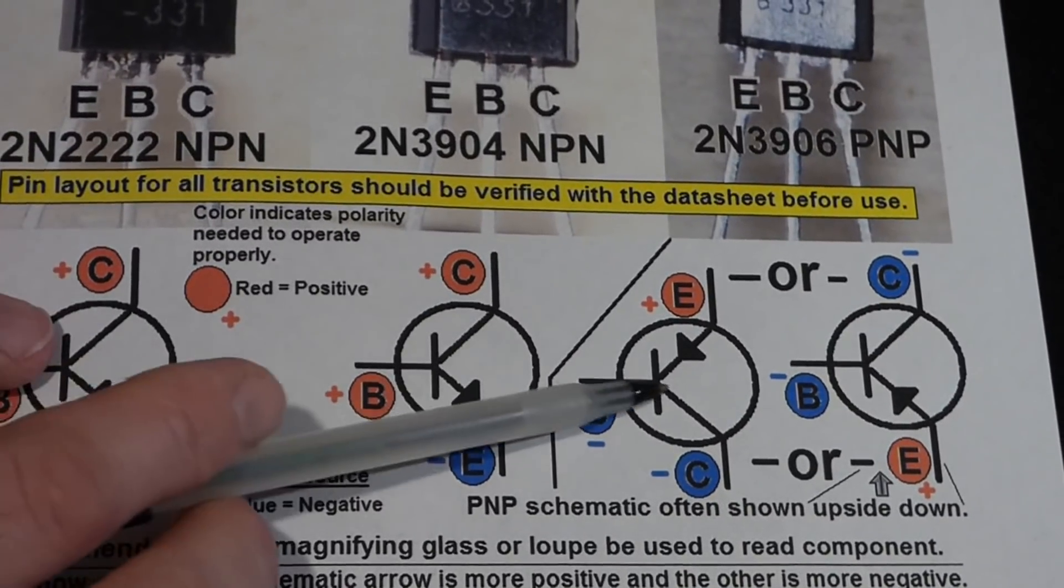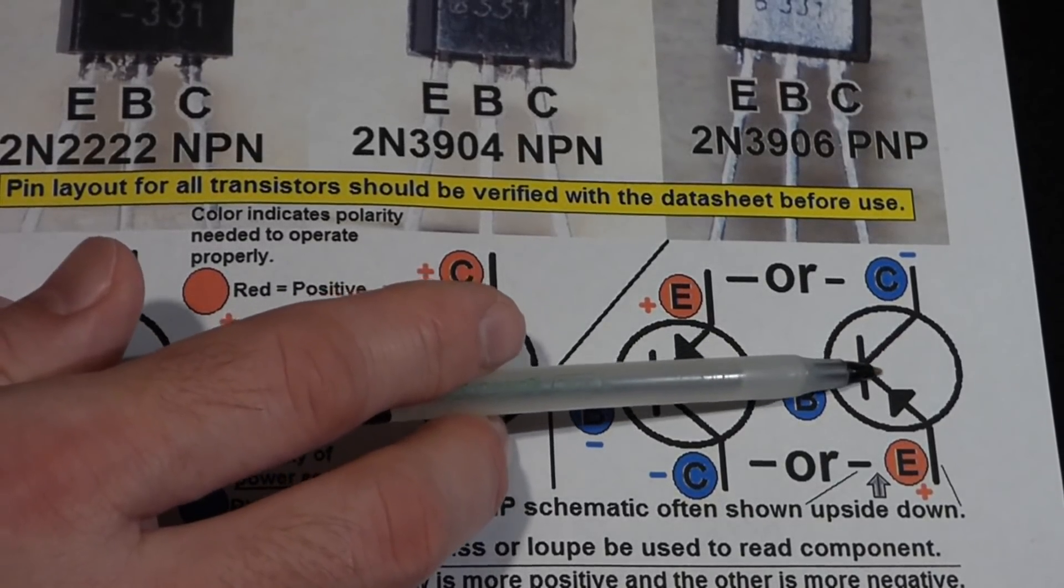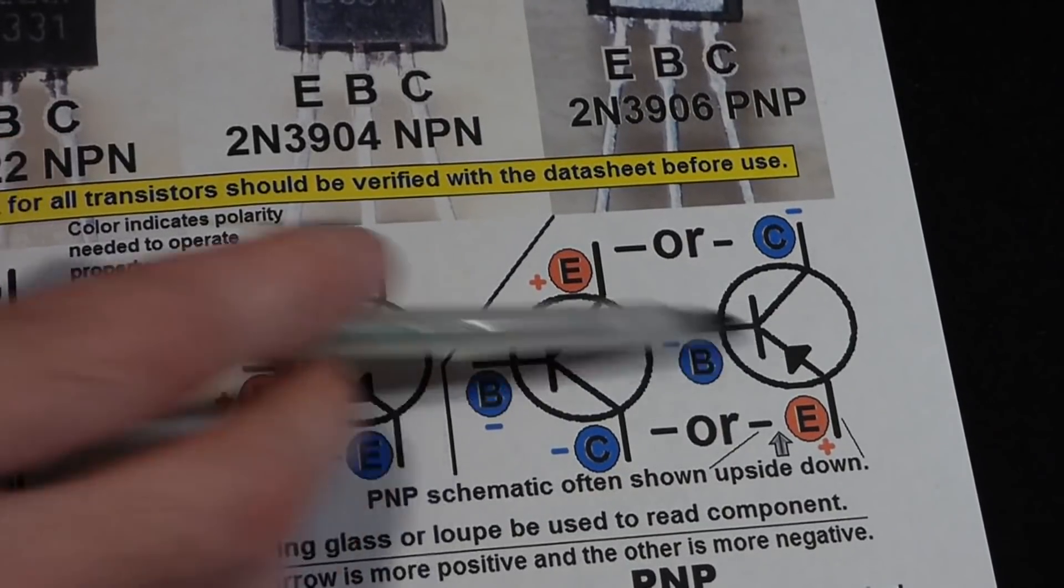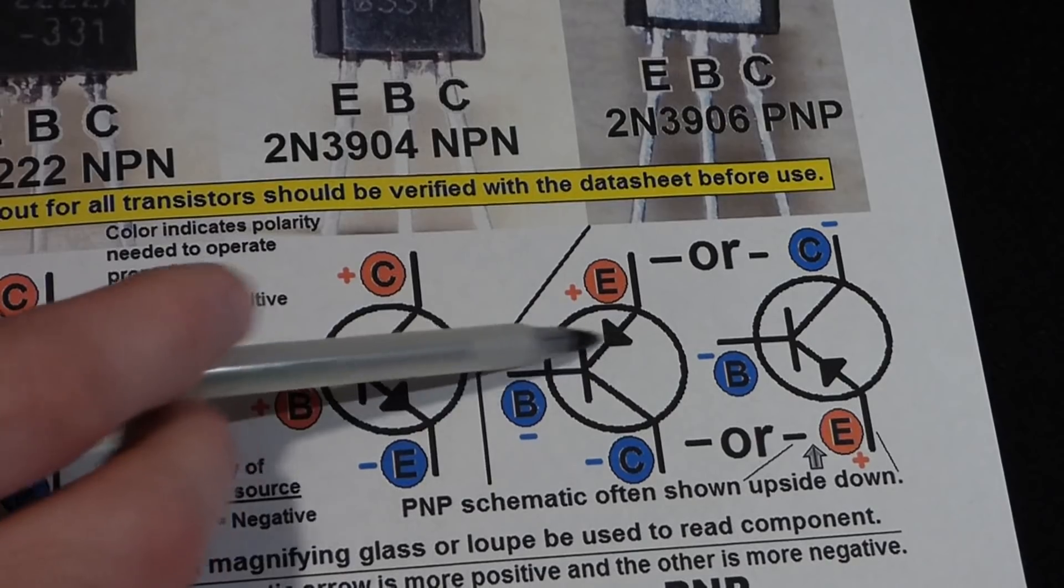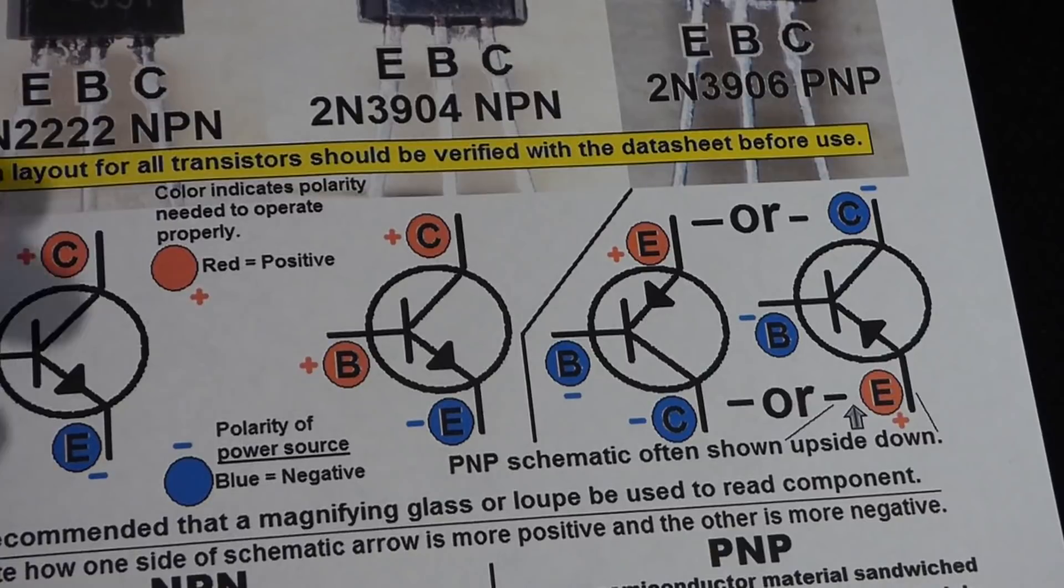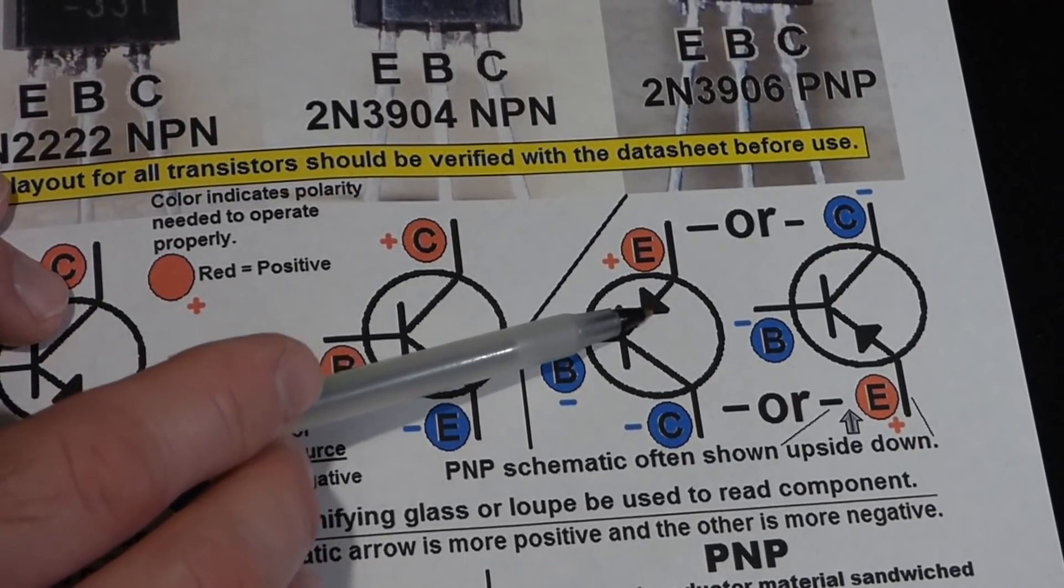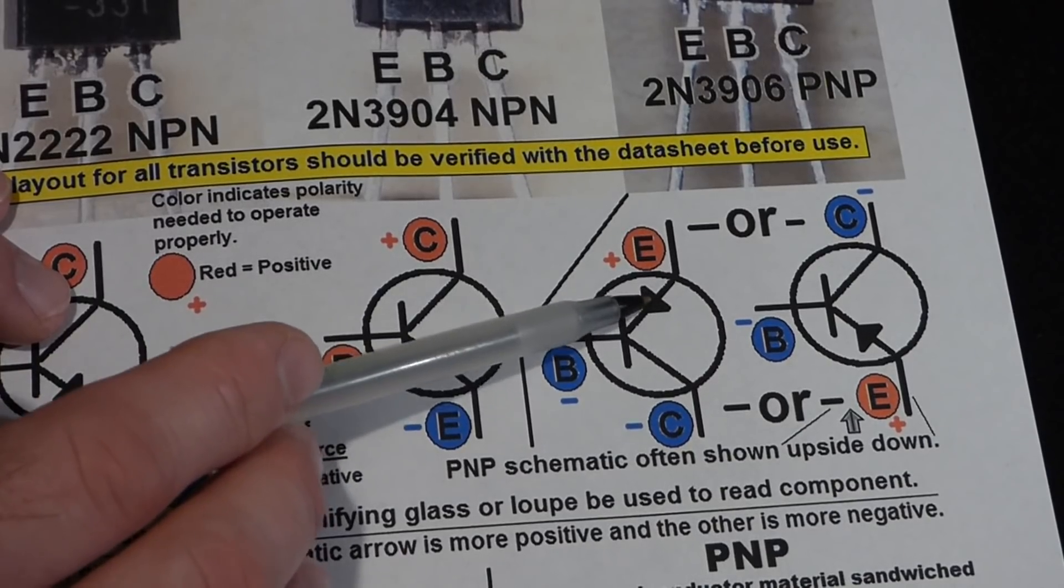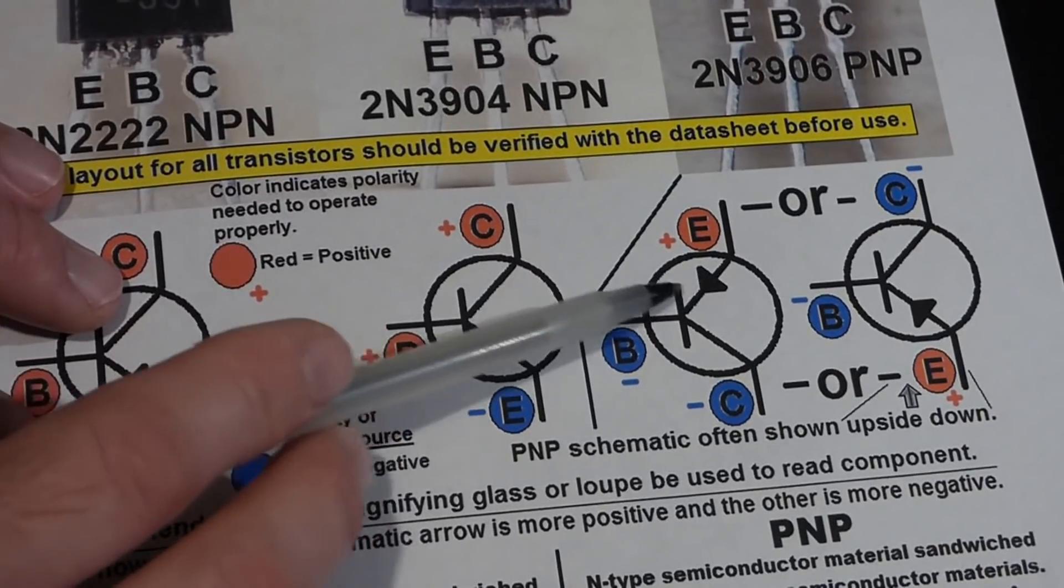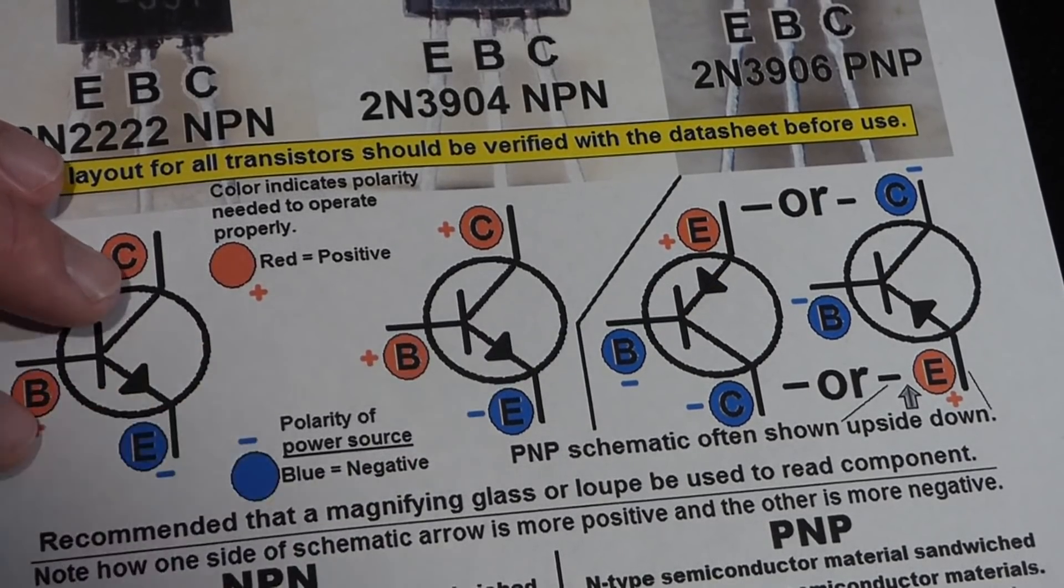Now, I added this other schematic diagram just to show that the schematic diagram isn't always like this with the emitter down here. It can be on top, the emitter can be on the side, and the base on another side. You can flip this around as you want. That doesn't matter. Just be aware that the emitter is the side with the arrow, and the type of transistor is which direction the arrow is pointing, whether it's pointing towards the base or away from the base.